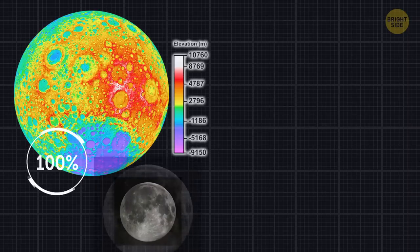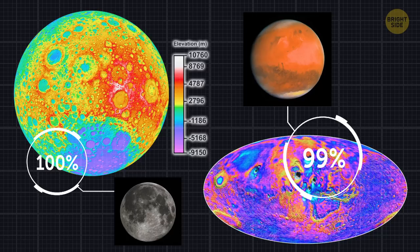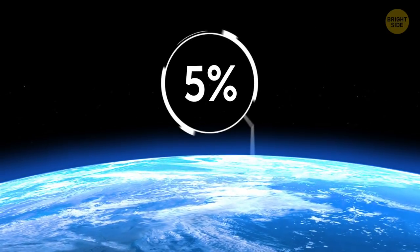We've mapped 100% of the Moon's surface, and 99% of the surface of Mars. But we've barely studied 5% of the Earth's oceanic floor.